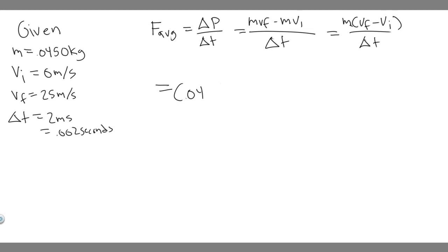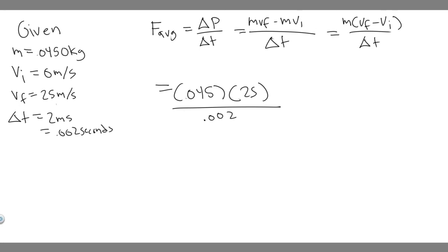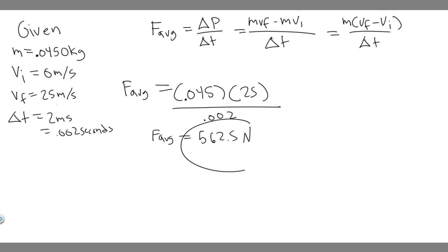Plugging values in: 0.045 multiplied by (v-final minus v-initial), which is 25 minus 0 = 25, all divided by the impact time 0.002. So we do 0.045 times 25, then divide by 0.002. When you do this, you get 562.5. Keep in mind the units are newtons, so the average force acting on the ball is 562.5 newtons. That's your answer to the first part.